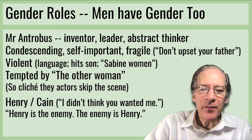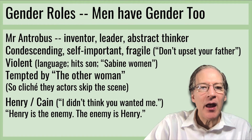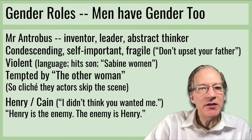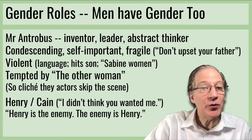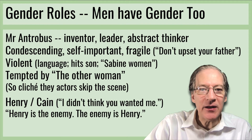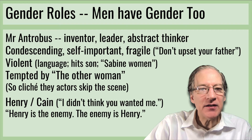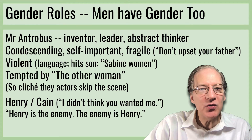Henry cannot escape the fact that he is Cain — the son of Adam and Eve who killed his good brother Abel. Henry is separated from the family and joins them on the ark at the end of Act Two only after his mother acknowledges who he is and calls him by his real name, Cain. He says, 'I didn't think you wanted me' when his mother was only calling out to Henry. In Act Three we learn that Henry is the enemy — the enemy that Antrobus and the good characters were fighting against. The stage directions insist that the actor portraying him in Act Three must portray him not as a misunderstood child but as an embodiment of pure evil.